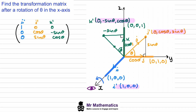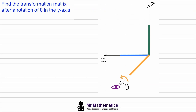In our next example we're going to rotate about the y-axis. Because we're rotating about the y-axis it's easier to have it facing you. You can see that all points that lie along this axis become invariant, so the transformed j will have coordinates (0, 1, 0).